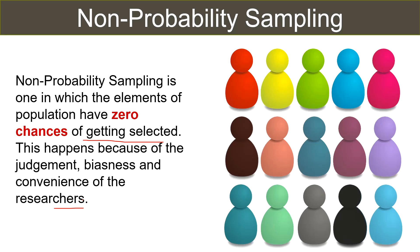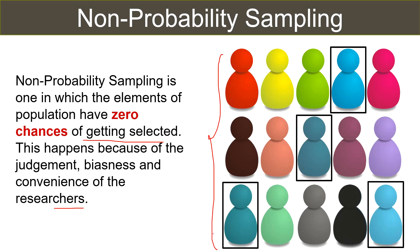This method is usually adopted when the number of elements in the population is either unknown or cannot be identified individually. The elements of the population do not have any known chance of being included in the sample. For example, suppose from the given population the researcher chooses the one in blue — such a sampling is called non-probability sampling, because biasness is involved while choosing the sample. This sampling design is used in exploratory research.